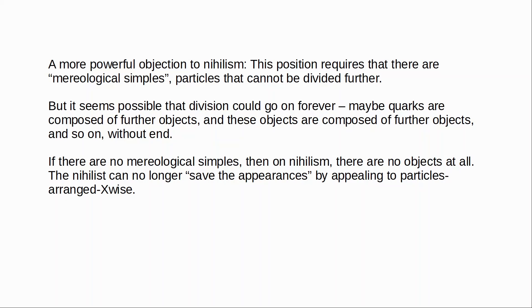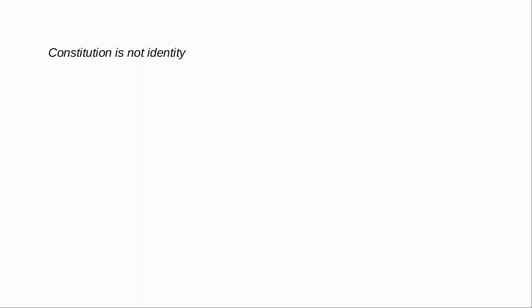Those were just a couple of basic objections to mereological nihilism. There are many other reasons why nihilism was proposed and many other arguments against it. But this has not been the most popular response to the problem of the many, so let's turn to some other possible views. The second solution is the view that constitution is not identity. This rejects the first premise of the argument — the claim that if there is a cloud there is a complex of atoms that is identical with the cloud. On this view none of the complexes is identical with the cloud. There are indeed many complexes of atoms, but none of them is a cloud. The cloud is something else — the cloud is constituted by these various complexes of atoms. Material constitution is not identity.